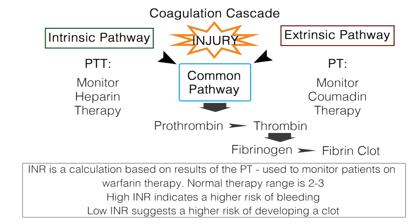The normal therapy range is 2-3, with a high INR indicating a higher risk of bleeding, and a low INR suggesting a higher risk of developing a clot. The INR can be used to adjust the patient's drug dosage to get the PT into the desired range. When starting warfarin, PT and INR should be assessed daily until a stable daily dose is reached — that is the dose that maintains the PT and INR within the therapeutic ranges and does not cause bleeding. From then on, PT and INR are checked every 2-4 weeks as long as drug therapy is continued.